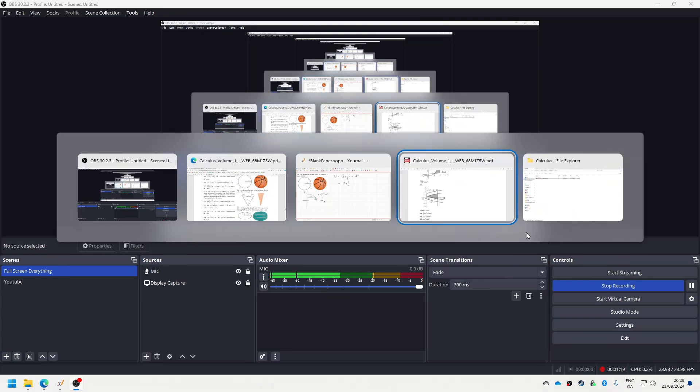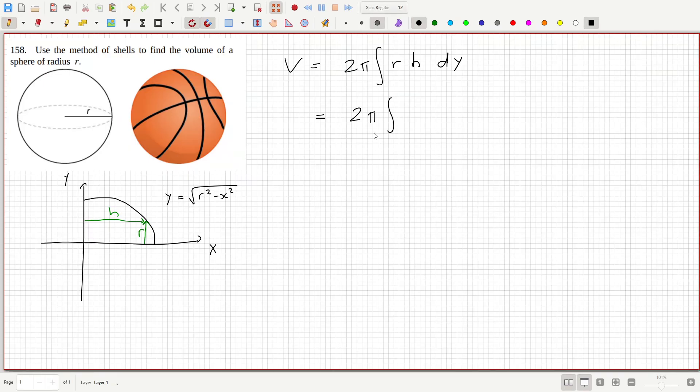Yeah it's the opposite one, so it's d y. Yeah, so the radius which is going to be just y from zero to r, and then the h.